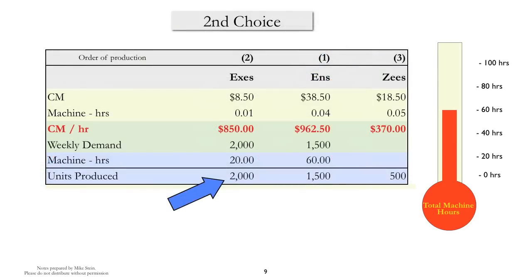Our next choice are X's. So we start manufacturing X's, and if we manufacture 2,000 X's, that will take 20 machine hours. Therefore, 80 machine hours have been used, and 25 machine hours remain.